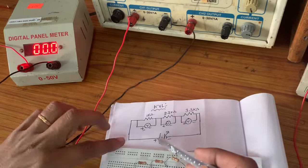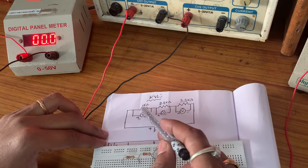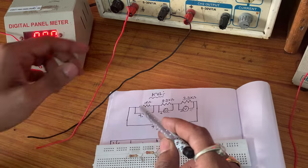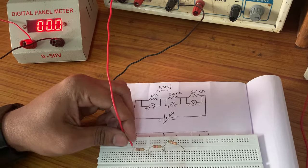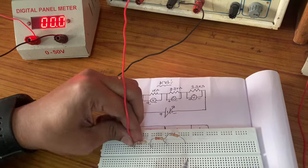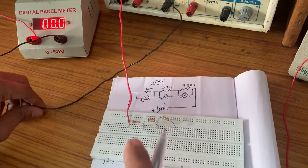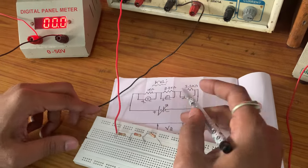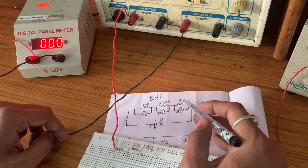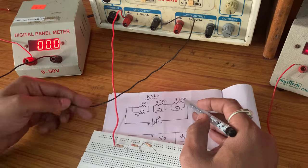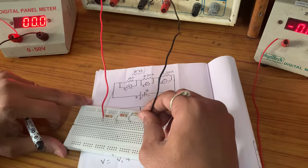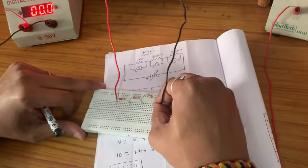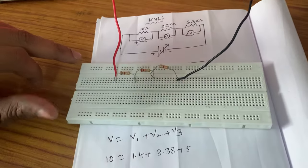We will connect the RPS here. RPS positive is connected to the 1 kOhm first terminal. RPS negative is connected to the 3.3 kOhm second terminal. I am now connecting RPS negative to the 3.3 kOhm second terminal.